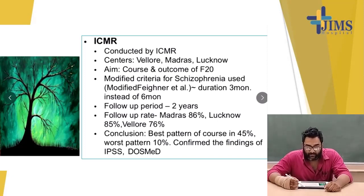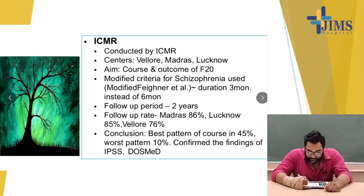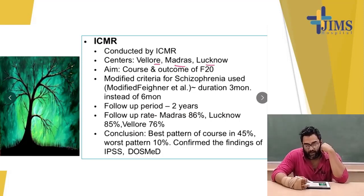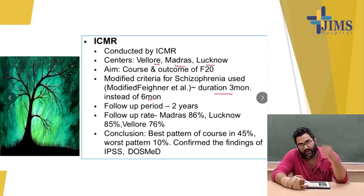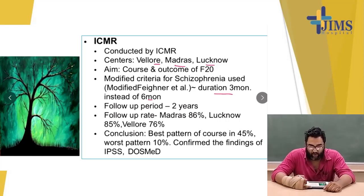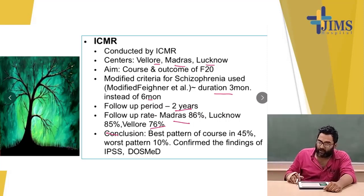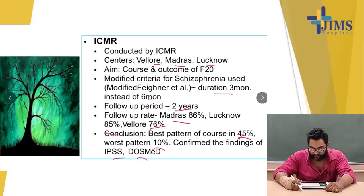ICON study had centers in Madras and Lucknow, studying the course and outcome of F20 — the ICD coding for schizophrenia. It used a modified criteria with a duration of three months instead of six months, and a follow-up period of two years. Recovery rates were: Madras 86%, Lucknow 85%, Vellore 76%. The conclusion was best pattern of course in 48%, worst pattern in 10%, which was a common finding across IPSS and DOS MED studies.